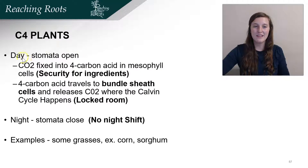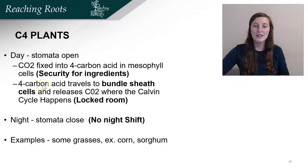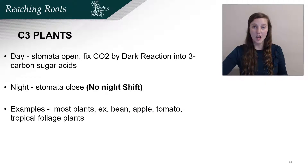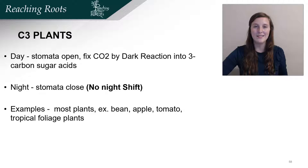In review: C4 plants during the day have their stomata open, and carbon dioxide is fixed into a 4-carbon acid in the mesophyll cells. This 4-carbon acid, which is malate, is security for the ingredients. Then that 4-carbon acid travels to the bundle sheath cells and releases carbon dioxide where the Calvin cycle happens. At night the stomata close. Some examples of C4 plants are grasses, corn, and sorghum. Unlike C4 plants, C3 plants don't have a locked room — the Calvin cycle in C3 plants occurs in the mesophyll cells. Some examples of C3 plants are beans, tomatoes, and apple trees.